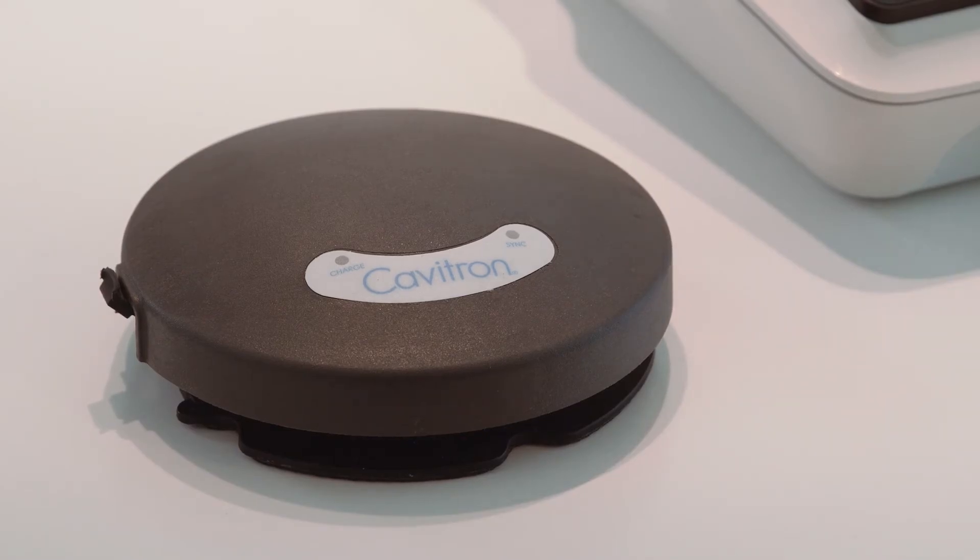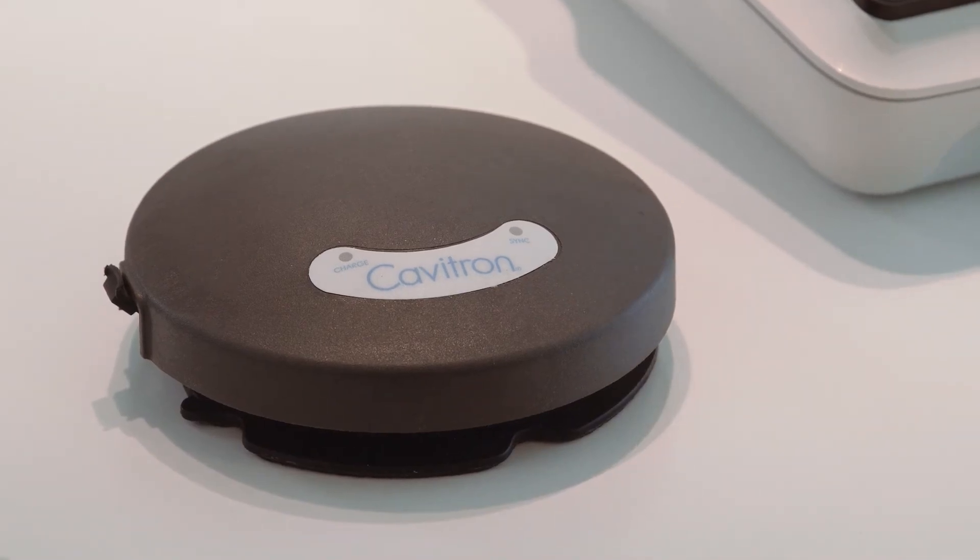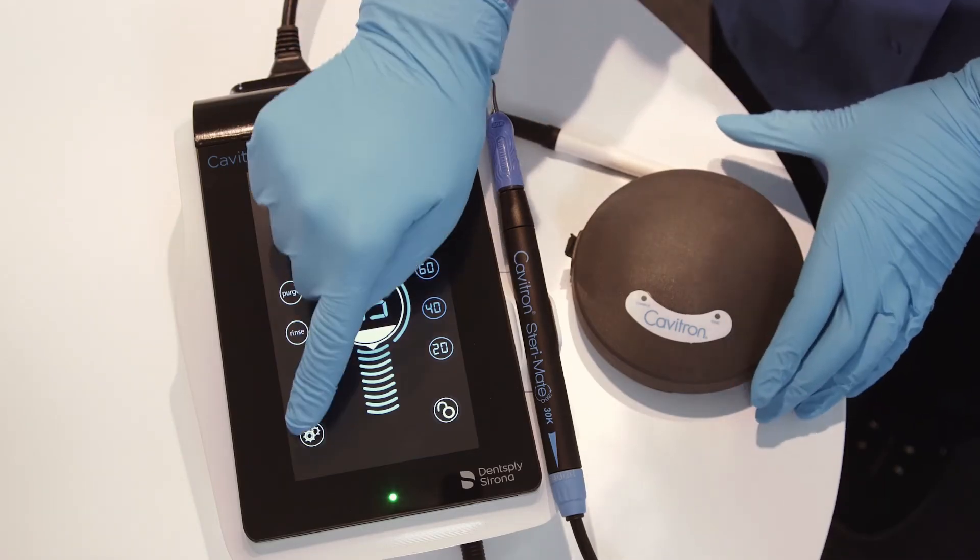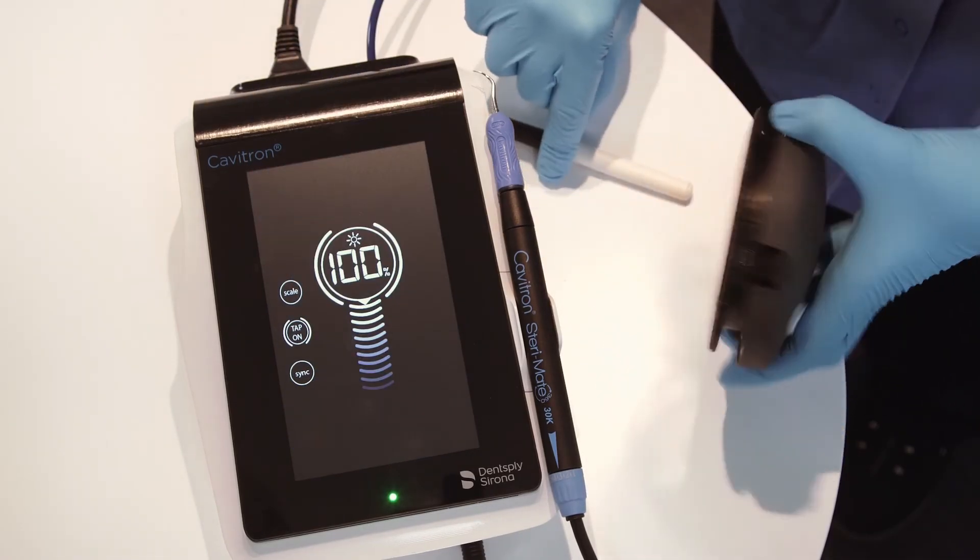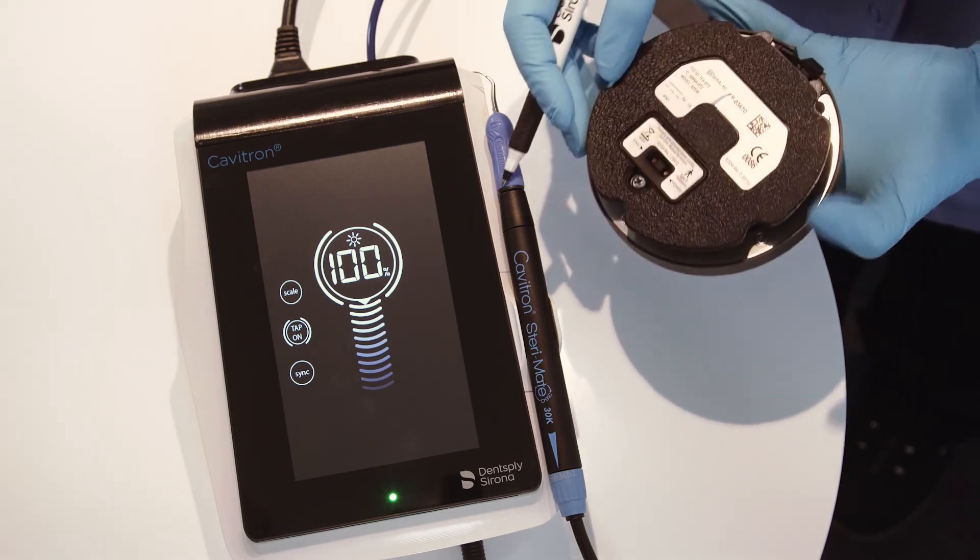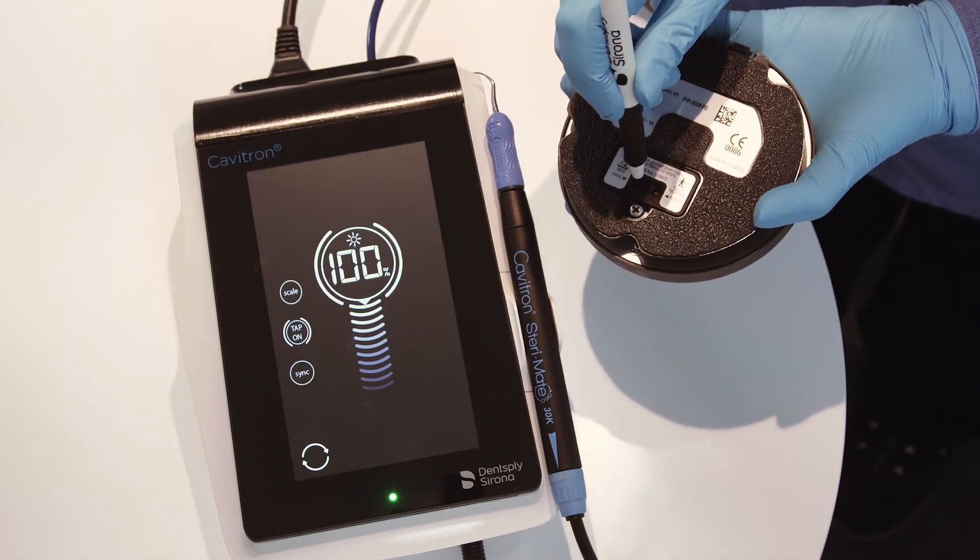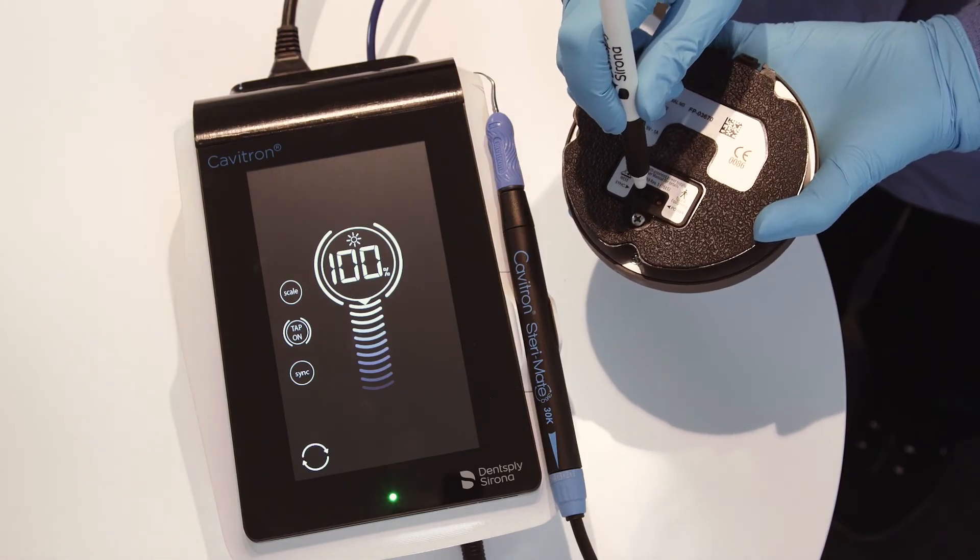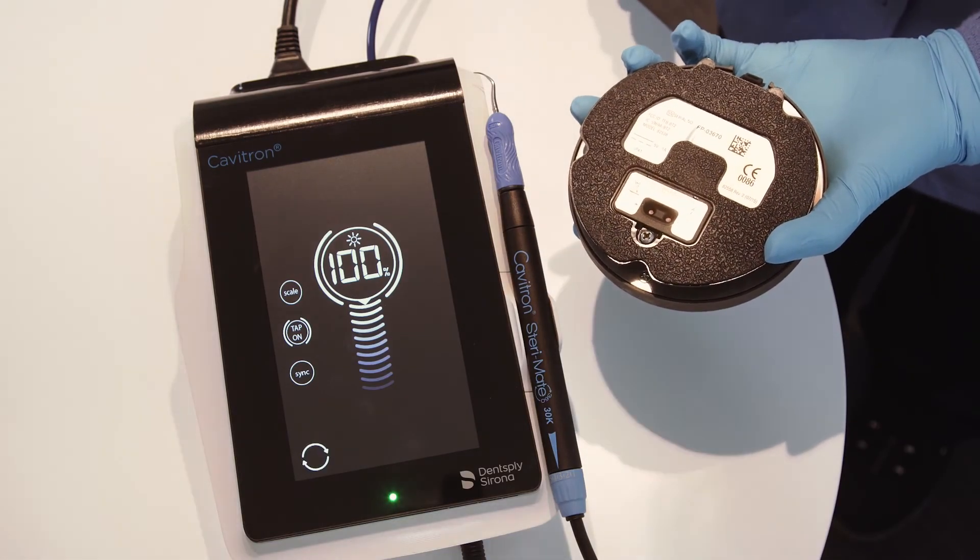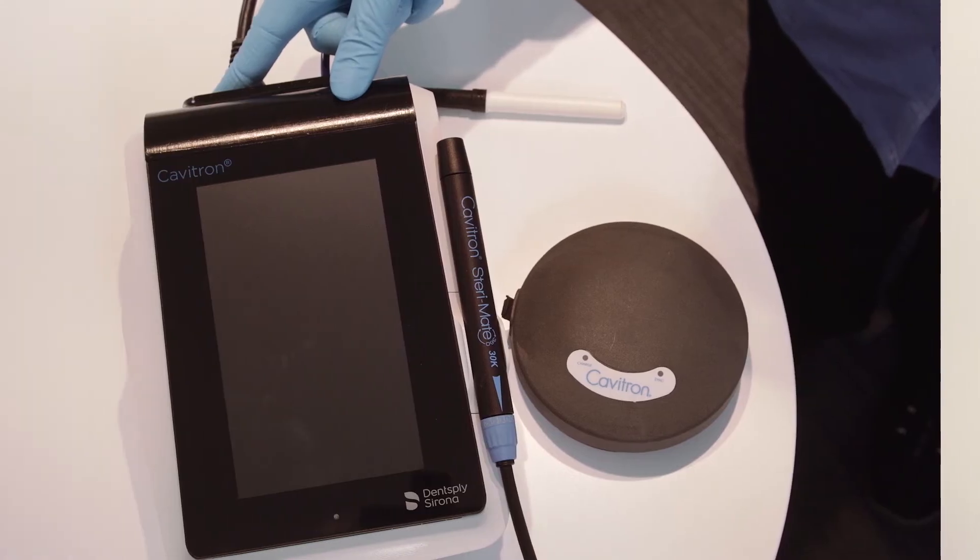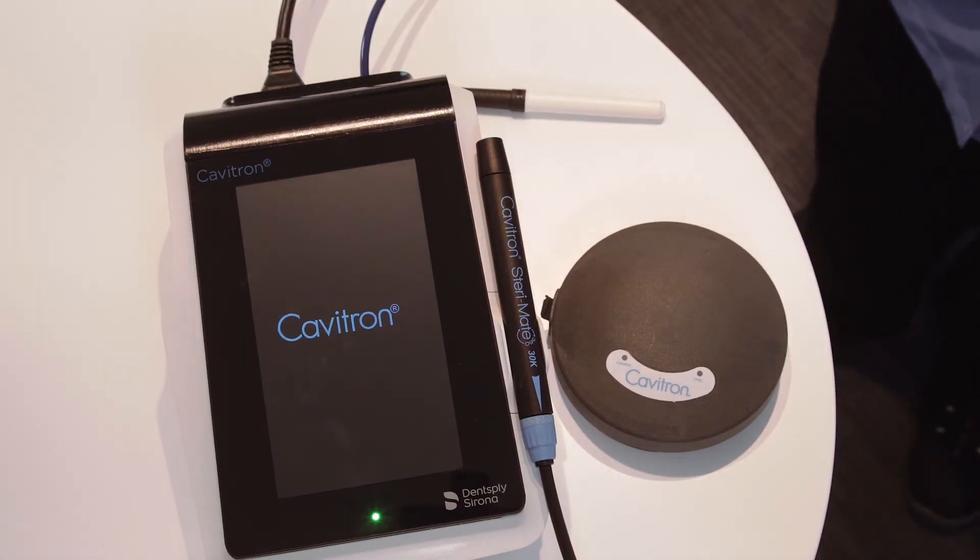The tap-on wireless rechargeable foot pedal supplied with your system has been factory synchronized with the base unit. Should a replacement foot pedal be necessary, synchronization will be required prior to system operation. Users should maintain a distance of no more than 10 feet between the base unit and tap-on foot pedal during the synchronization process. To synchronize your foot pedal, begin by turning on the main power switch located at the rear of the system to the on position. The main screen will appear. This is also referred to as the scaling menu screen.